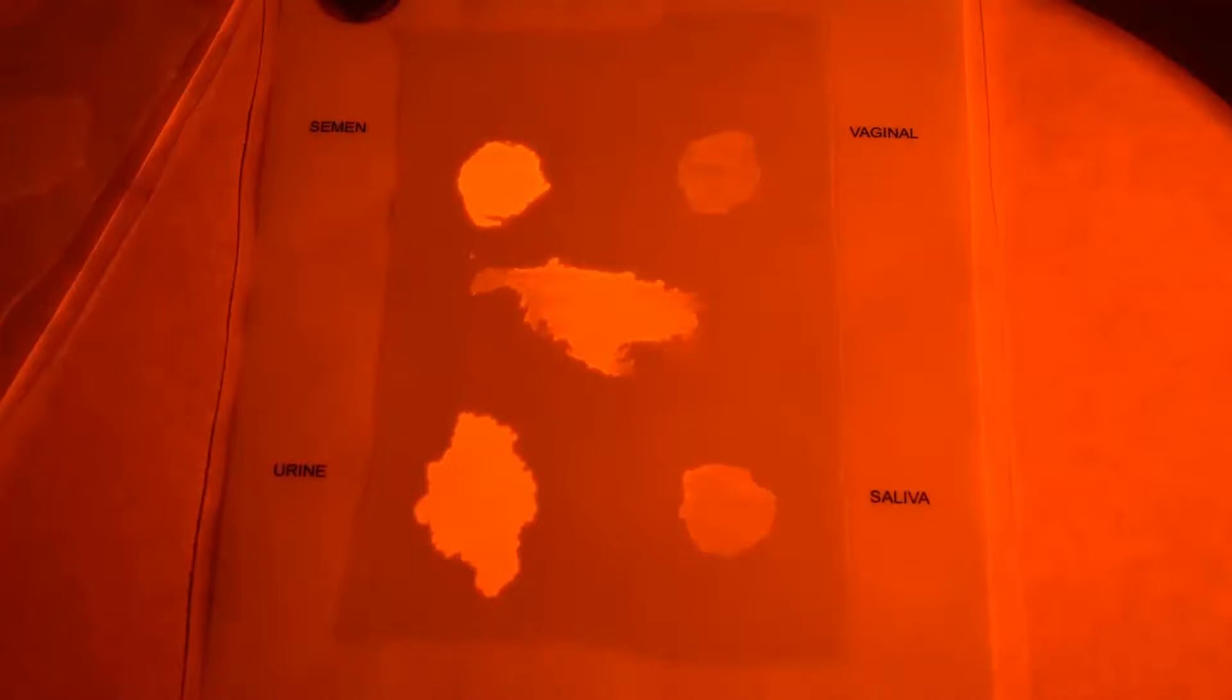A forensic light source is an effective tool to find body fluids such as semen, urine, saliva, and blood. All body fluids fluoresce, except for blood, which absorbs light and becomes darker.